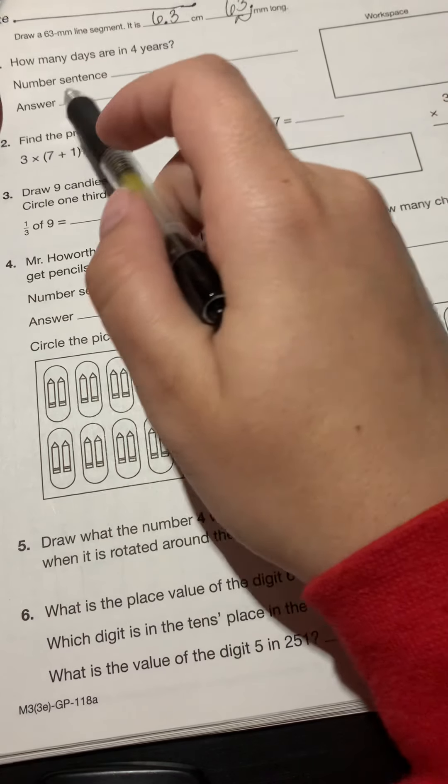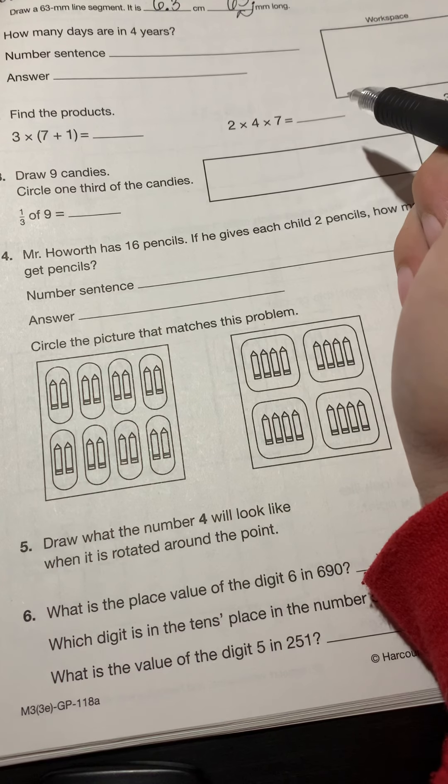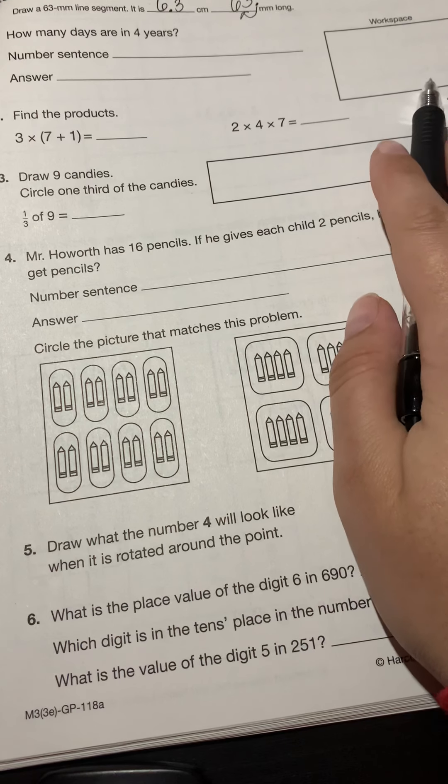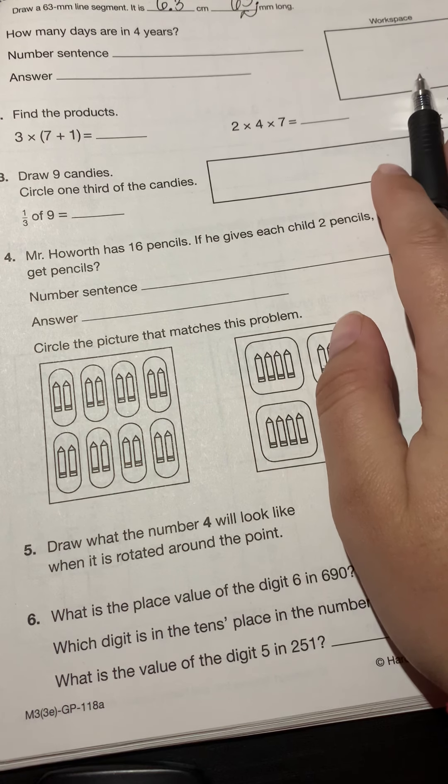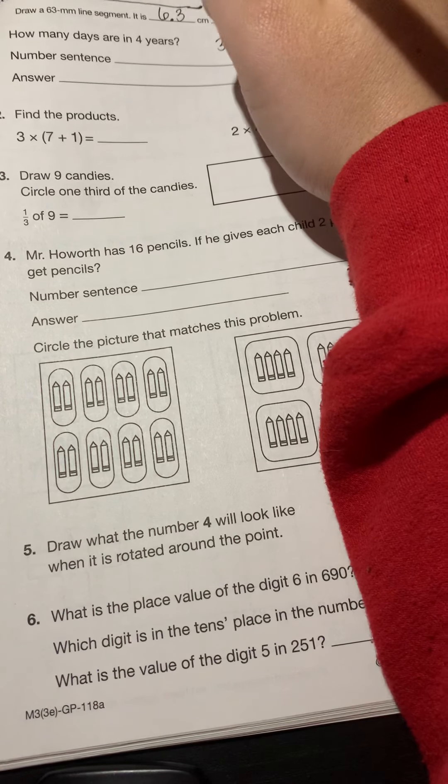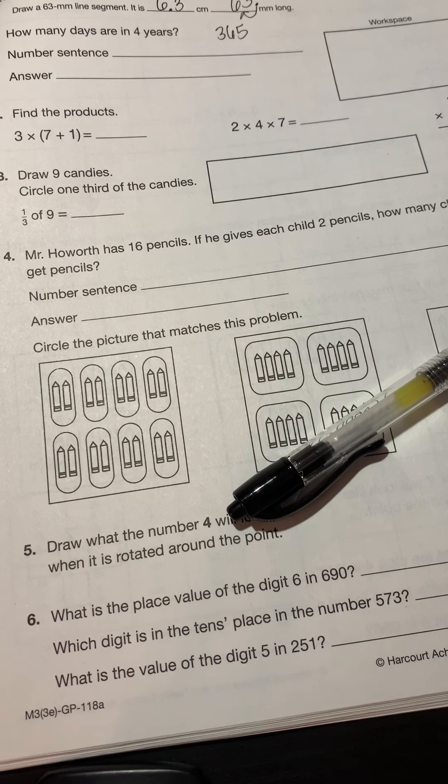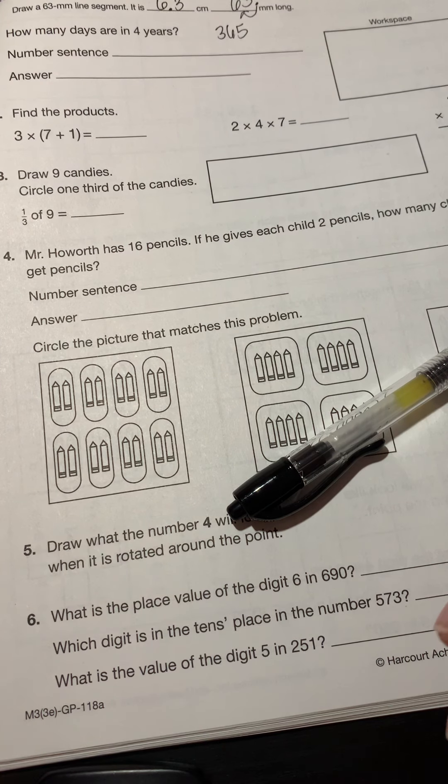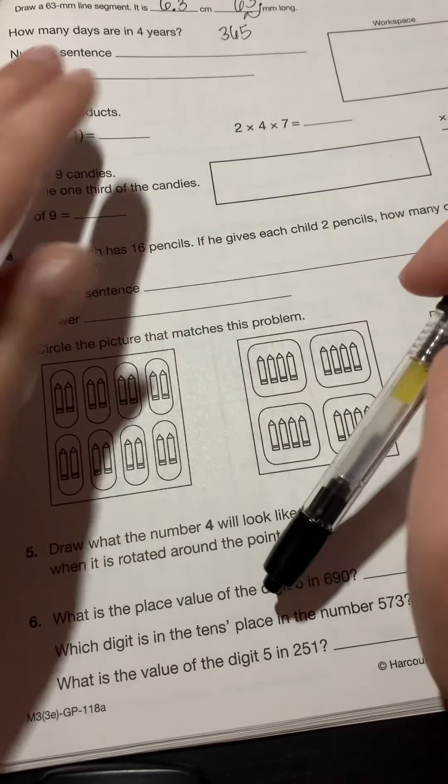Let's take a look at our first problem. How many days are in four years? Okay. So does anyone remember how many days are in one year? So we have 365 days in one year. So how would you guess that we're going to solve this problem? What are we going to do here? What's my number sentence going to be?